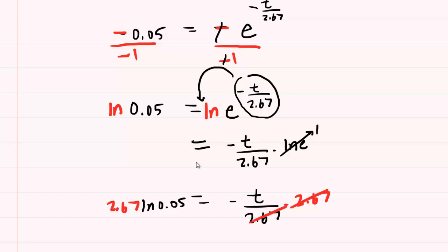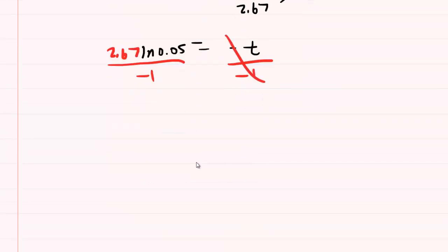The 2.67s will cancel out on the right-hand side, and then we have negative t hanging out here. We don't want negative t, we want t. So we're going to divide both sides of the equation by negative 1 one more time. The negatives cancel there. Now you just pick up your calculator and you type this expression in. 2.67 times the natural log of 0.05, and then divide that by negative 1. You end up with about 7.99 seconds as the correct answer to part C.